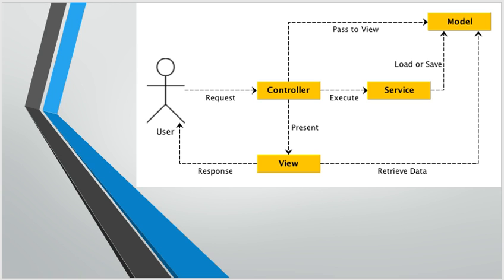For example, if you're on a transaction details page, the controller should update the model with a list of transactions from the last month, and the view should be the transaction details page. The service layer retrieves this data from the database or APIs. A transaction service could have methods like getTransactions, updateTransaction, deleteTransaction, getTransactionsForOneMonth, getTransactionsForOneYear, and so on.